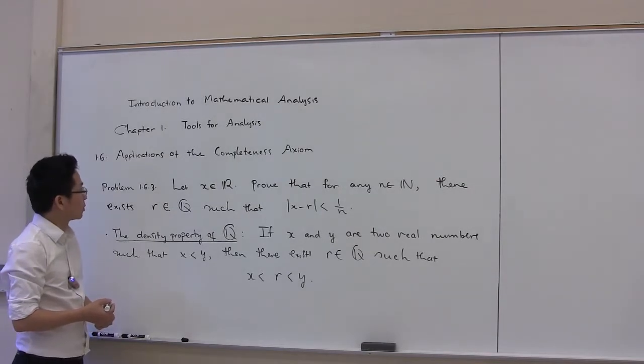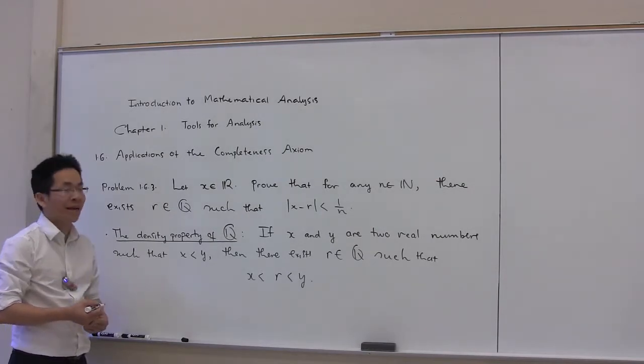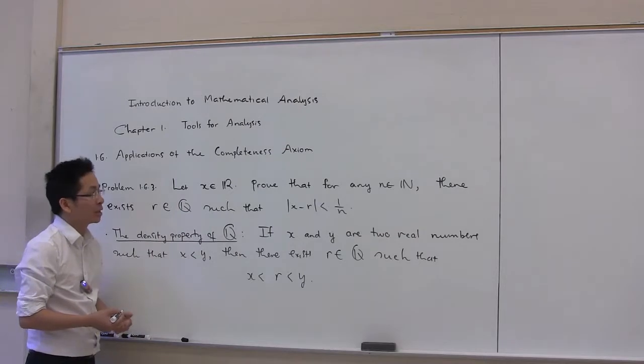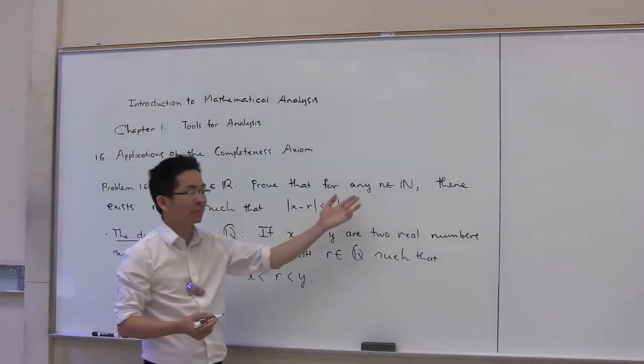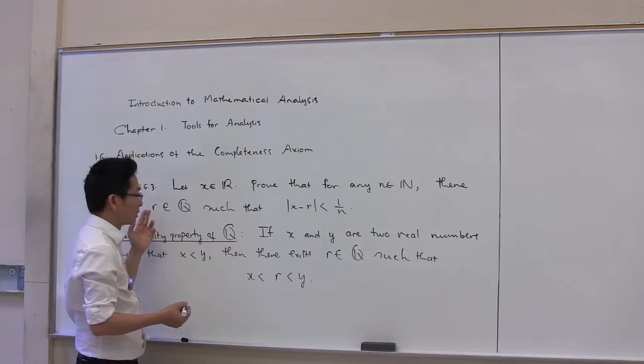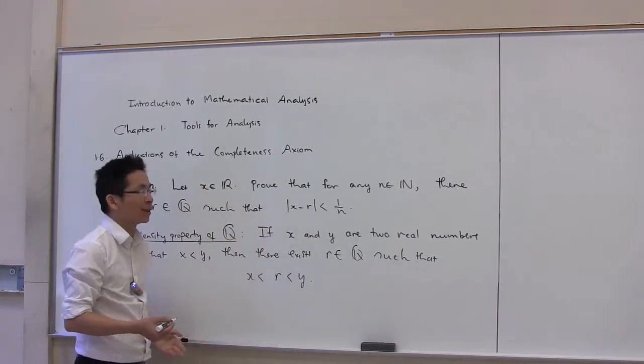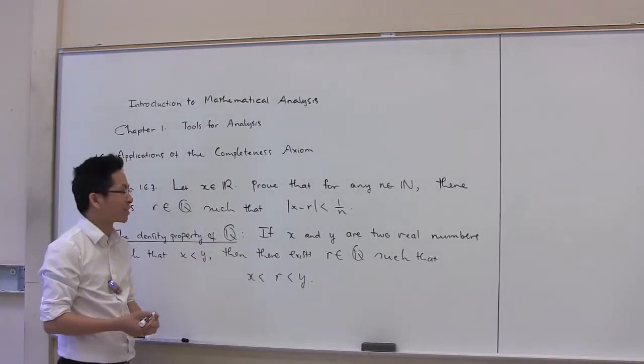In this video, we're going to work on problem 1.6.3 from the textbook. Let x be a real number. Prove that for any natural number n, there exists a rational number r such that the absolute value of x minus r is less than 1/n.